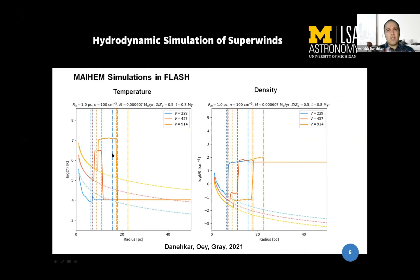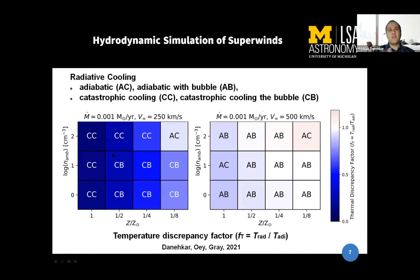I did a parametric investigation. I ran a series of grids for different mass loss rates, ambient density, metallicity, and velocity. In this example shown here, you see that catastrophic cooling happens at high metallicity and low velocities. CC is catastrophic cooling, CB is catastrophic cooling with bubbles, and ABAC is the adiabatic solution.